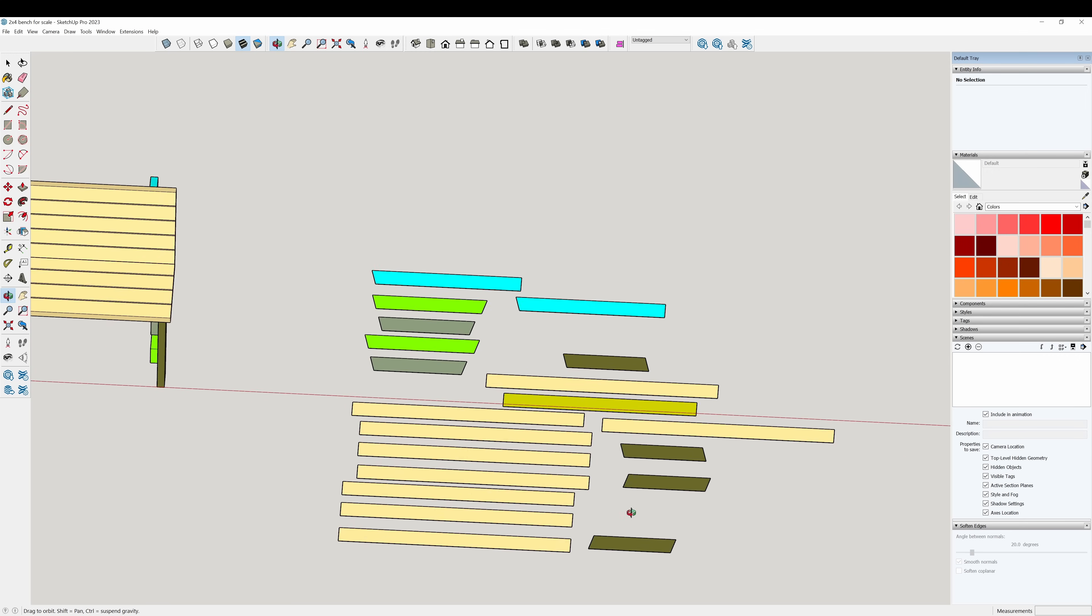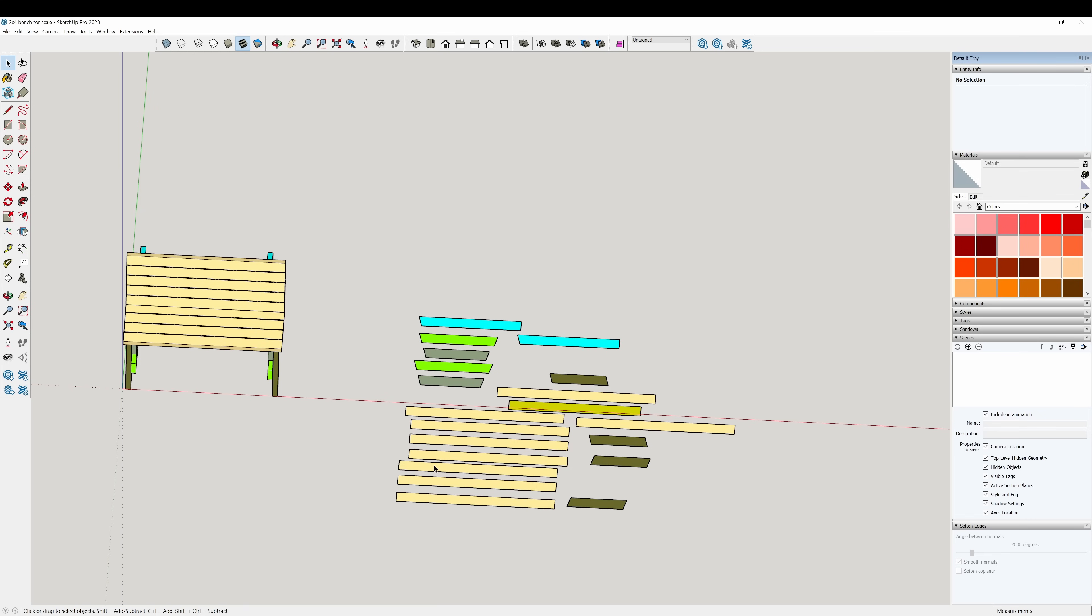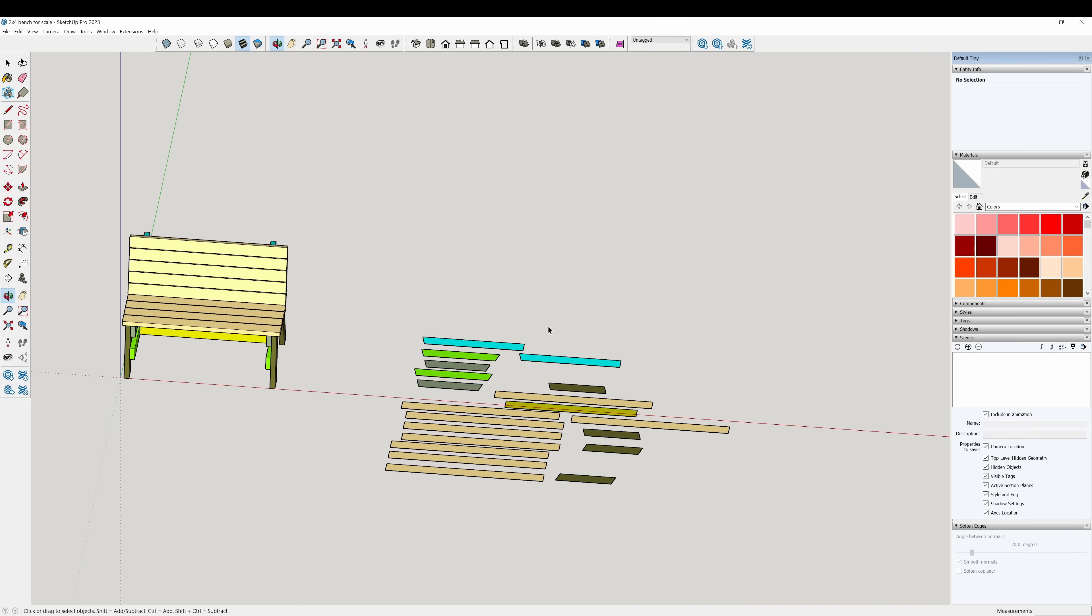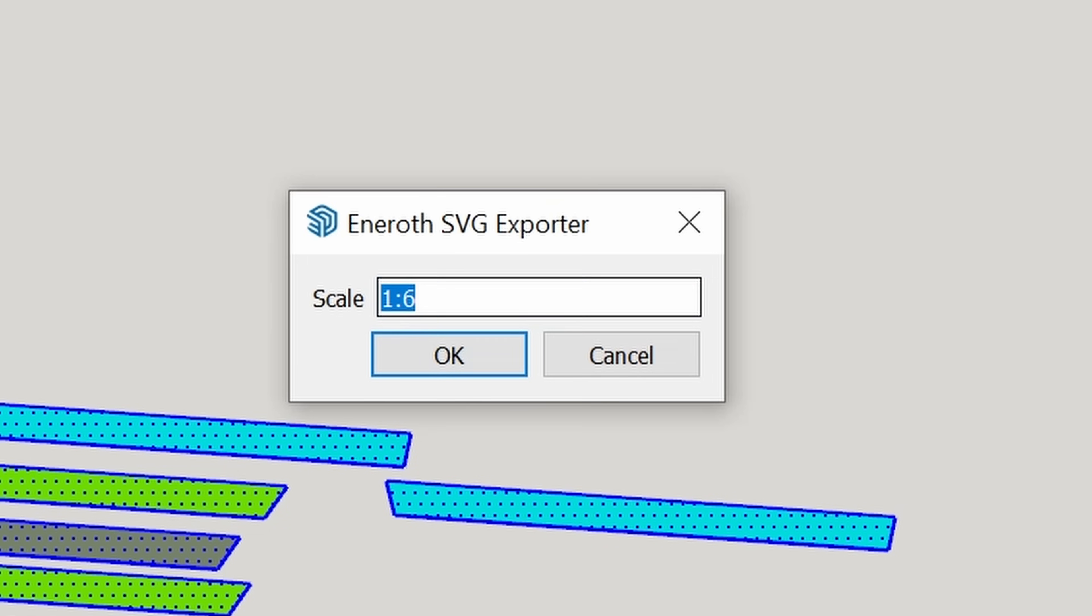This is a super simple concept, super simple project here to demonstrate this on. So this is all the information that I want. I'm going to select it and go up to extensions and Enroth SVG exporter. And the cool thing is, I've already done this. So it says, what scale do you want? Normally it starts out as one to one. We've already determined we want a one to six scale. So it's actually going to export on my scale. Press OK, and then you save it wherever you want to save it.